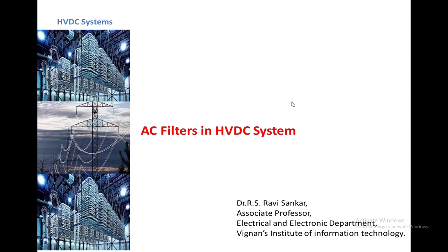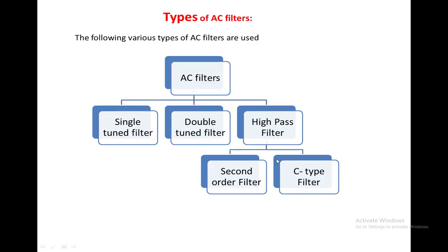Welcome to the class on AC filters in HVDC systems. In this class we are going to discuss the different AC filters used in an HVDC system. We use three different types: single tuned filter, double tuned filter, and high pass filter. The high pass filter is further divided into two categories: second order filter and C type filter.